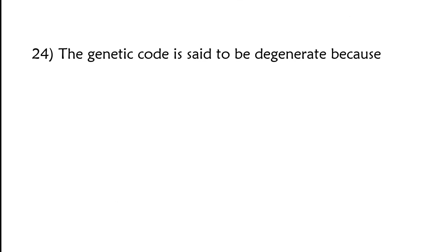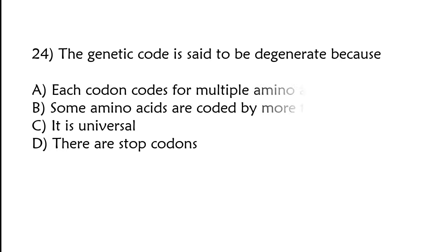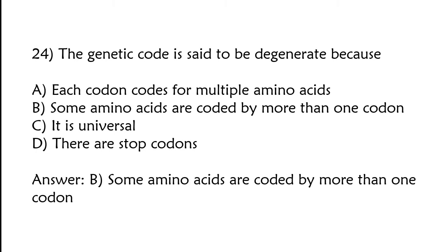The genetic code is said to be degenerate because: each codon codes for multiple amino acids, some amino acids are coded by more than one codon, it is universal, or there are stop codons. The correct answer is option B, some amino acids are coded by more than one codon.